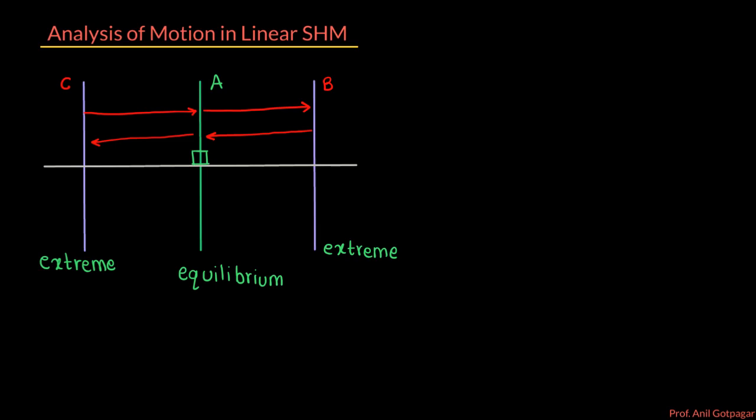Toh ye jo motion hai, we will divide it into parts. First part will be from A to B. Then particle will move from B to A, phir A to C, and again back from C to A — so this is one complete SHM. Aur ye motion kaisa hai? In a straight line. So the path in this figure is a straight line, and this is called linear SHM.